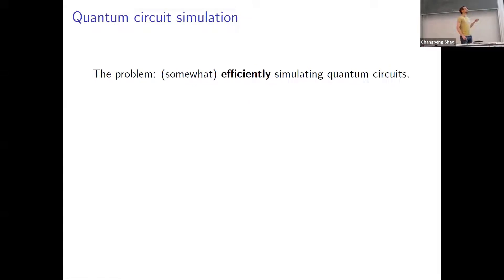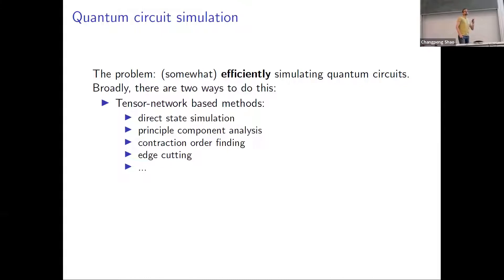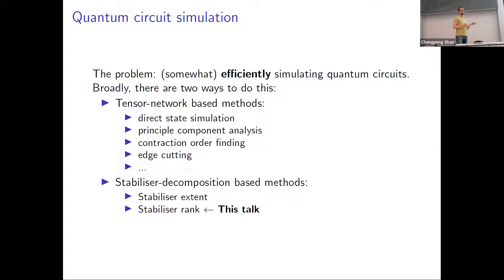The problem is we want to somewhat efficiently simulate quantum circuits. In the general setting, we don't expect it to be faster than exponential, because if you could do it efficiently, we would all be out of jobs. But we can still think of what's the smartest way we can do it. There are broadly two different categories: tensor network-based methods, which scale exponentially in the number of qubits, and stabilizer decomposition-based methods, which scale exponentially in the number of non-Clifford gates.